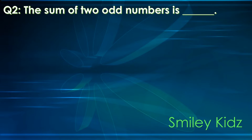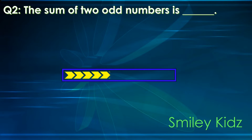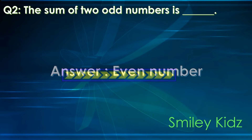Question number 2. The sum of two odd numbers is? Your time starts now. Your time is up. The correct answer is even number. The sum of two odd numbers is an even number.